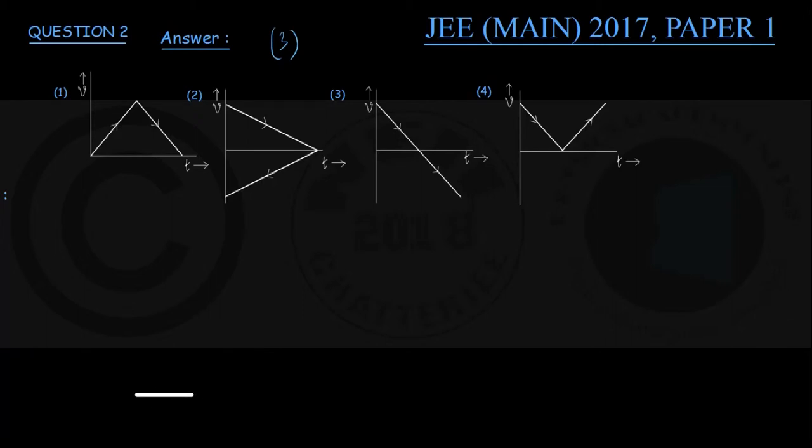Suppose this is the ground. This is the particle that is thrown vertically upwards with an initial velocity of u, shown by this blue arrow.